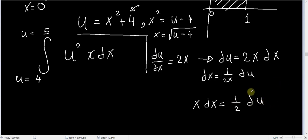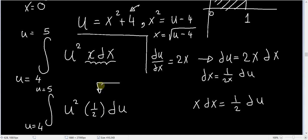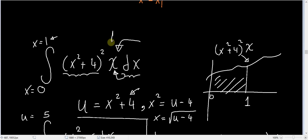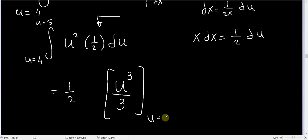So I can take x dx and substitute (1/2) du instead. This integration becomes from u = 4 to u = 5 of u² × (1/2) du. This integral is much easier to evaluate than the original, giving (1/2) × (u³ / 3), evaluated from u = 4 to u = 5.